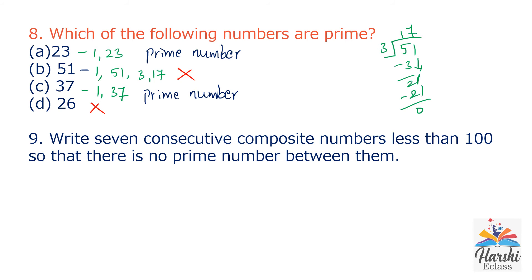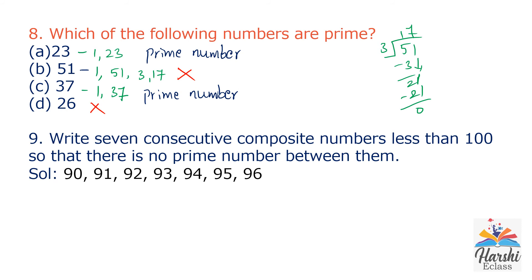Question 9: Write 7 consecutive composite numbers less than 100 such that there is no prime number between them. Consecutive means numbers which come in an order. The answer is: 90, 91, 92, 93, 94, 95, 96. These are 7 consecutive composite numbers, all less than 100, with no prime number between them.